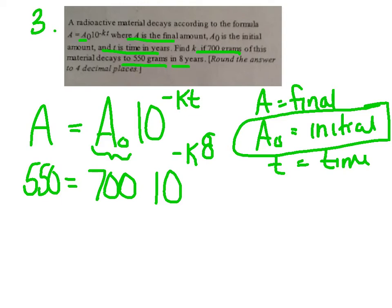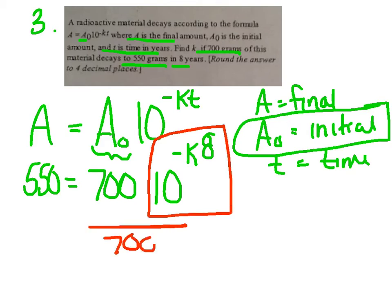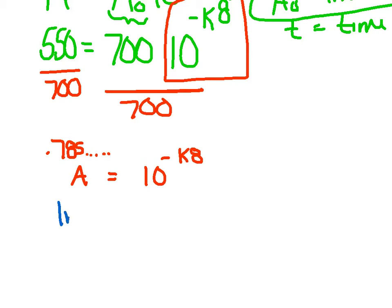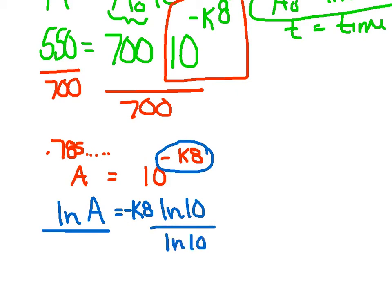But, again, I would just start by boxing in this exponent. It's only, only sitting on the 10. Box that in. That's who you need to isolate. So, I'll start by dividing the 700. I get a 0.785, blah, blah, blah, blah. I'm storing that into a. equals 10 to the negative k, 8. I'm going to take the ln of both sides, or common log. It doesn't matter. The ln of a equals the ln of 10 to the negative k, 8. But, remember, that exponent comes down in front. That's that law, 3. My goal is to eventually get that k by itself. So, I'm just going to divide them over one at a time. I'm first going to divide both sides by the ln of 10.